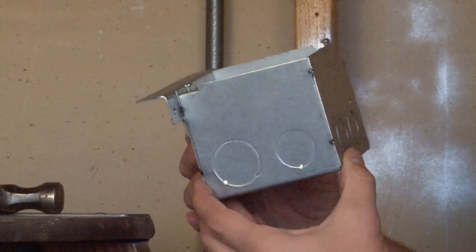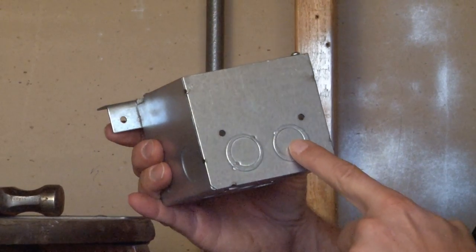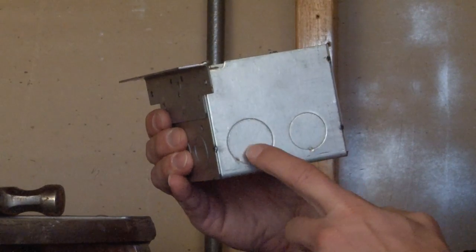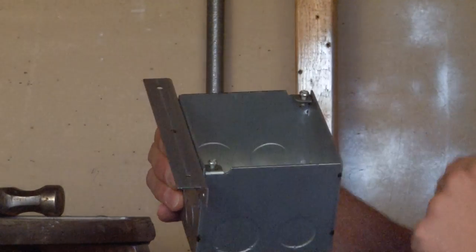This particular box has both half and three-quarter inch conduit knockouts as well as three-quarter and one inch conduit knockouts directly across from each other.